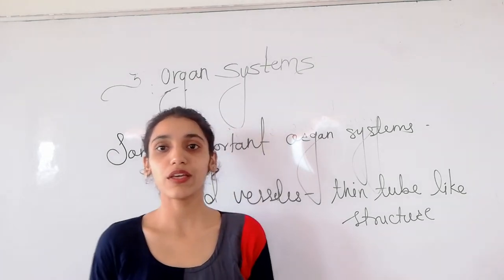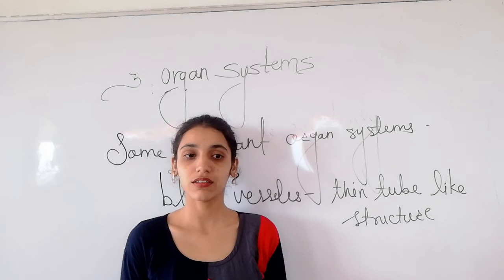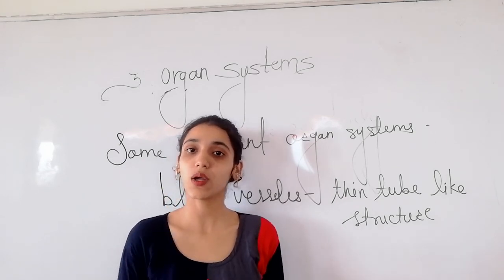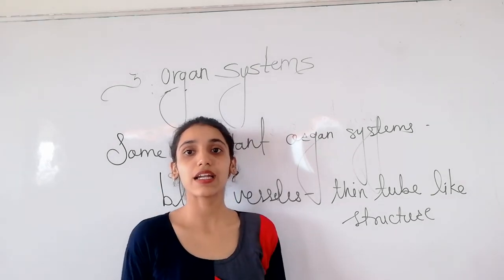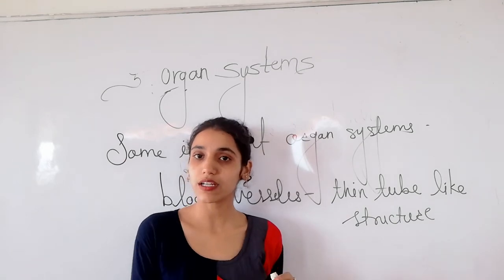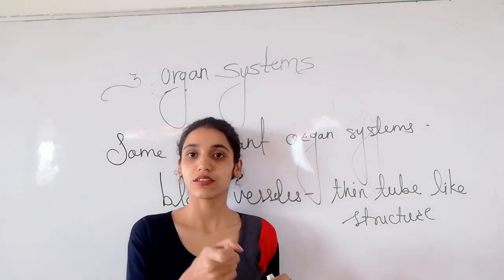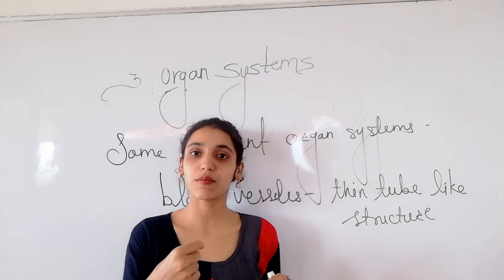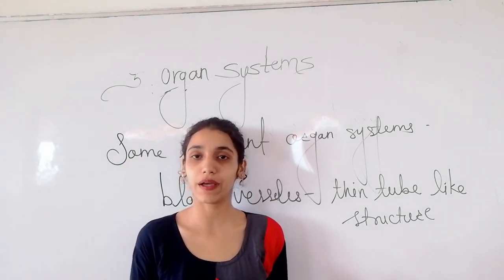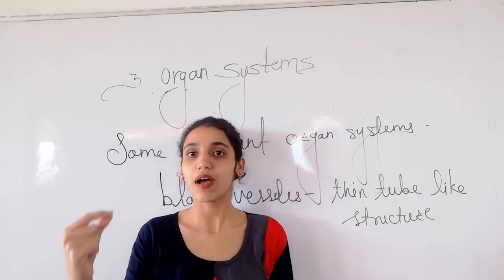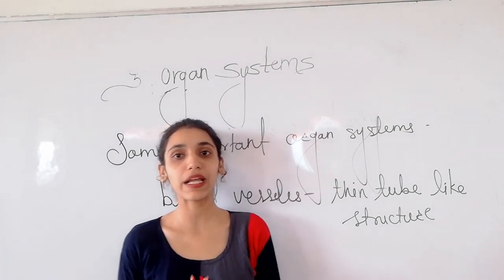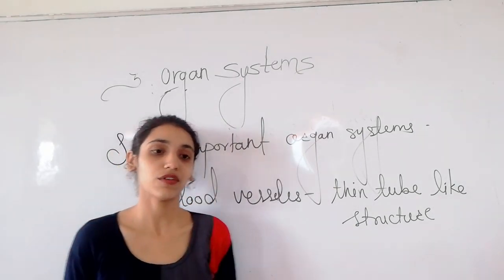Today you have to do one task: list each and every system of our body and their organs. Digestive system: mouth, food pipe, stomach, and intestine. Respiratory system: nose, lungs, and windpipe. Circulatory system: heart and blood vessels. Nervous system: brain. The brain is the main part of our nervous system.